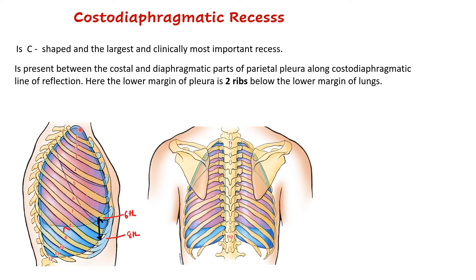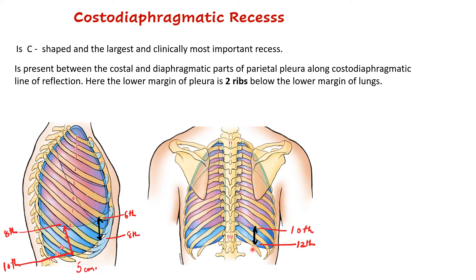At the mid-clavicular line, the lower margin of the lung extends to the 6th rib whereas the lower margin of the parietal pleura extends to the 8th rib. At the mid-axillary line, the lower margin of the lungs is at the 8th rib and the lower margin of the pleura is at the 10th rib. At the scapular line posteriorly, the lower margin of the lung is at the 10th rib and the lower margin of the parietal pleura is at the 12th rib. So because of this difference of two ribs, this recess is created.